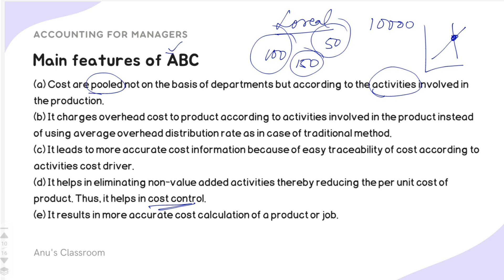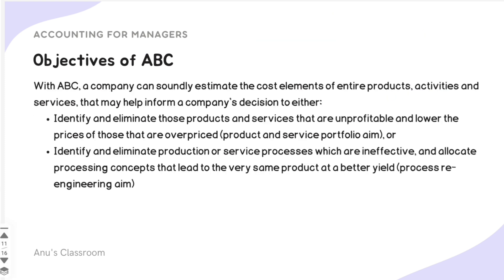The objectives of ABC: with ABC, a company can soundly estimate the cost elements of entire products, activities, and services. This helps inform decisions to identify and eliminate unprofitable products and services, lower prices of overpriced products, and identify and eliminate ineffective production or service processes. It also helps allocate processing concepts that lead to the same product at better yield — that is, process re-engineering.